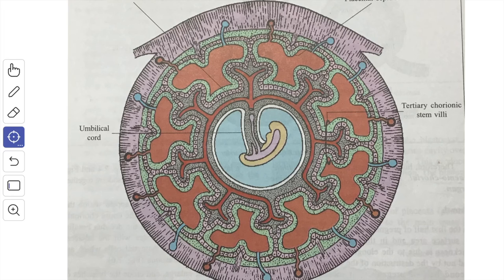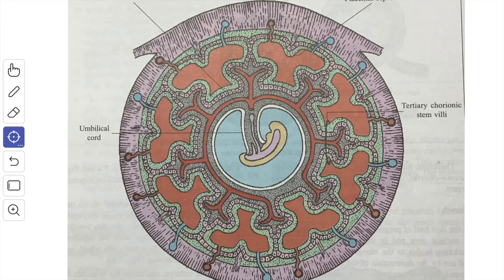Since the number of maternal cotyledons is 15 to 30, it is suggested that each cotyledon contains 2 to 4 major stem villi. A major stem villus and the vessels derived from it form the fetal cotyledon. The compartments of the intervillus space are not watertight and communicate with one another around the stem villi. The space is lined internally by syncytial trophoblast and is filled with maternal blood, which does not communicate directly with the fetal blood. About 500 ml of maternal blood circulate through the intervillus space per minute. Since the volume of the intervillus space is about 140 ml, the blood within the space is exchanged about 4 times per minute.